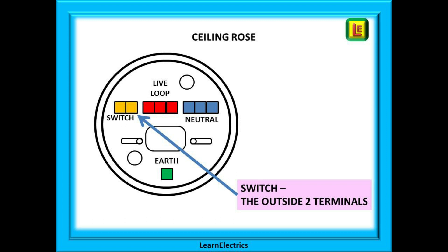The outside block of two, colored yellow here, is called the switch block. The middle block, colored red, is known as the live loop or just loop. And finally, the outside block of three, colored blue, is always neutral. Always follow this sequence.